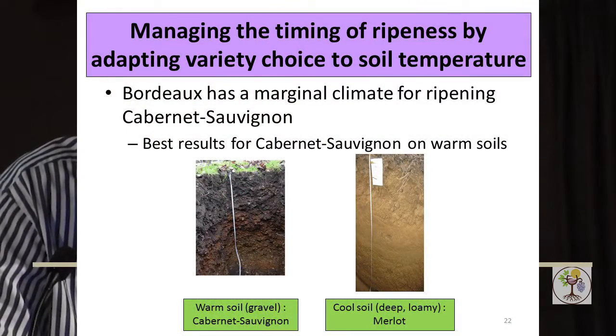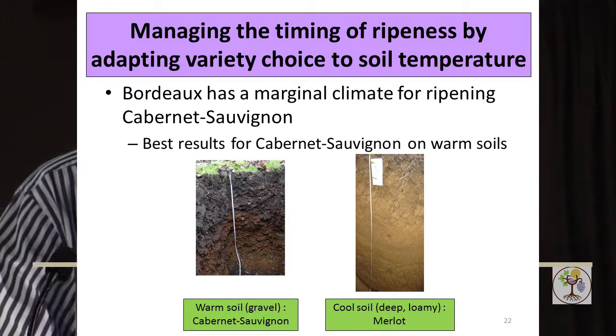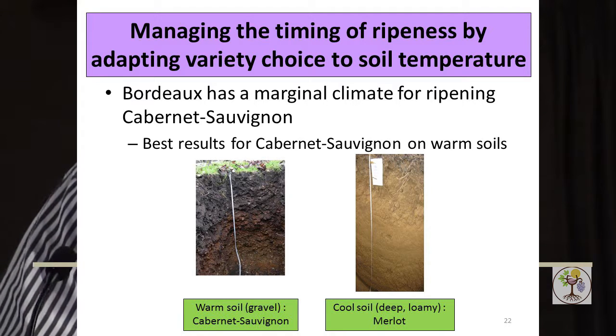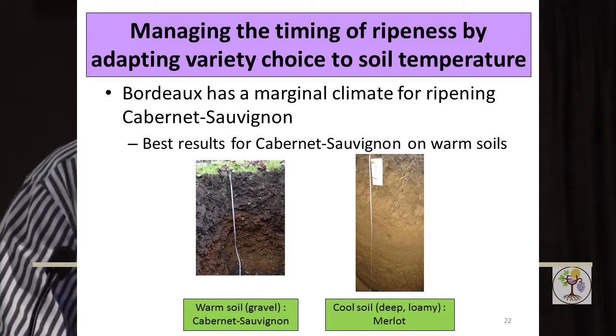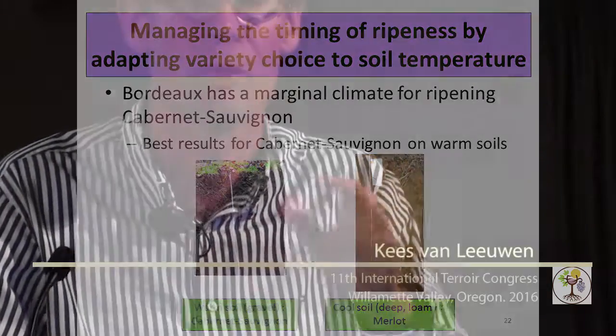The timing of ripeness can also be adapted through soil temperature at a smaller scale. In the Bordeaux area we grow several varieties — Merlot, Cabernet Franc, Cabernet Sauvignon for red wine. There's quite a big difference between the timing of ripeness of Merlot and Cabernet Sauvignon. Cabernet Sauvignon is tricky because it's right at the end of the ripening window, ripening on average between the 5th and 10th of October. In a cool vintage, we have a hard time getting it to full ripeness. So people plant Cabernet Sauvignon on warm soils — in Bordeaux this gives about one week more precocity, so it ripens on average on the 1st of October, giving a little more room in a cool vintage. On cooler and deeper soils we plant Merlot because Merlot is earlier and can reach full ripeness even on a cool soil in a cool vintage.